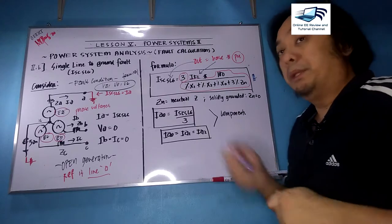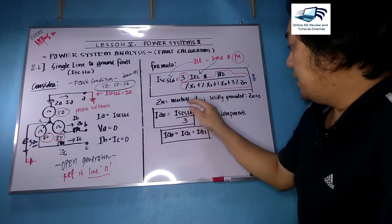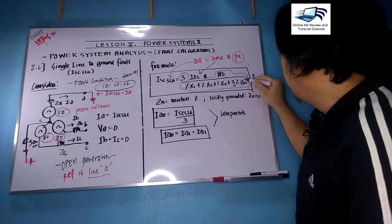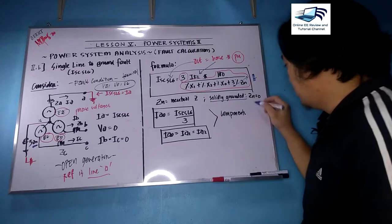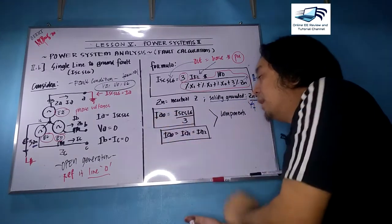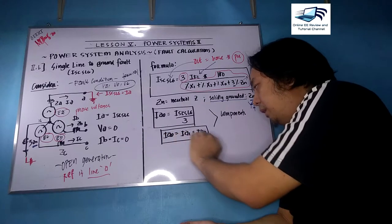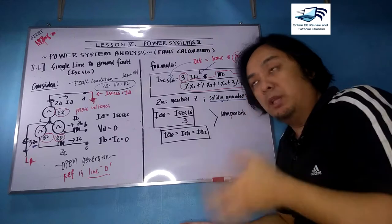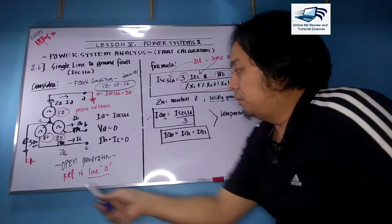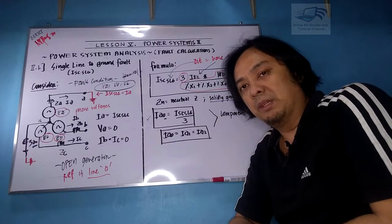We have a new parameter: the neutral reactance or neutral impedance ZN. ZN is always multiplied by 3. It will be eliminated if and only if the system is solidly grounded — meaning ZN is zero. To get the components: Ia0 equals ISC single line-to-ground divided by 3. In a single line-to-ground fault, Ia0, Ia1, and Ia2 are all equal. There is now a zero sequence component because the ground is involved in the calculation.